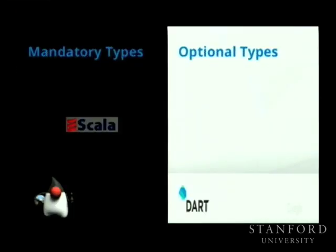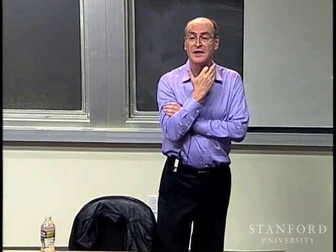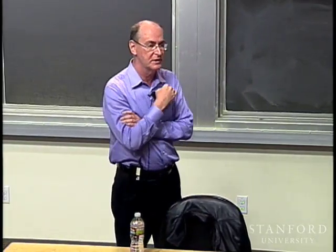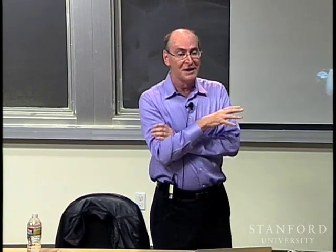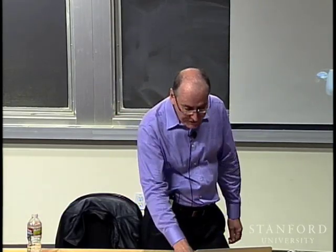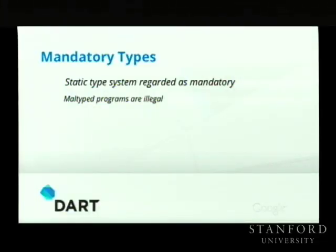Optional types — what do we mean? First, a bit of terminology. Optional types as opposed to mandatory types. Mandatory types are the types you know and love, or hate, in most statically typed programming languages. The idea is that types are required: a legal program has to pass the type checker, otherwise it can't compile and it can't run. On the other hand, you can read the alternative as leaving the tyranny of type theory behind and into the sunlit plains of the Wild West of optional typing, depending on your religion.